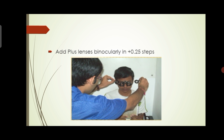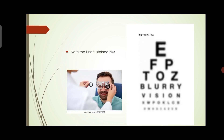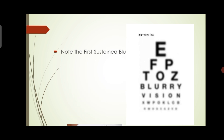Add the plus lenses binocularly in the trial frame and ask the patient to read the N8 target. Be very quick during the procedure. The patient should hold the chart comfortably and not change the working distance. Note the first sustained blur — this is when the patient sees blur for the first time. Tell the patient to blink; if they can clear it, add another +0.25. If they cannot clear it, that is the first sustained blur.